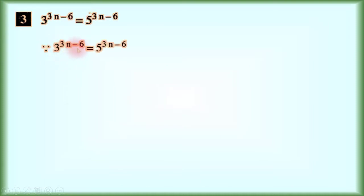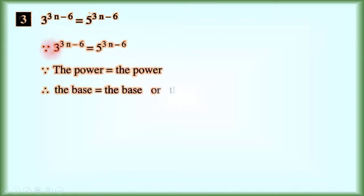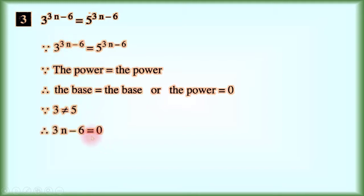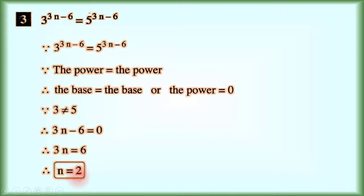Number 3: 3 power (3n minus 6) equals 5 power (3n minus 6). Since the powers are equal, either the bases are equal or the power equals 0. Since the bases are not equal — 3 does not equal 5 — therefore the power must equal 0: 3n minus 6 equals 0, so n equals 6 over 3, which equals 2.